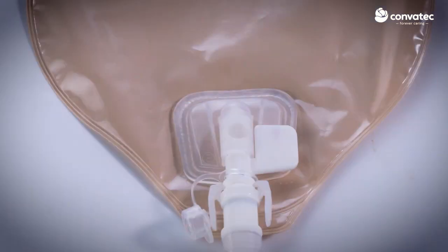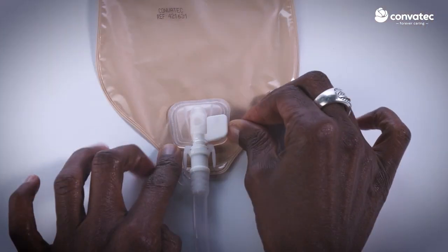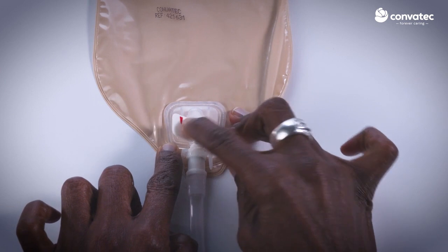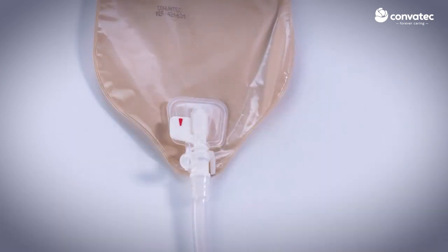Finally, the pouch will need to be open in order to drain into the container. To do this, rotate the AccuSeal tap to the open position. The colored mark on the tab shows that the tap is open.